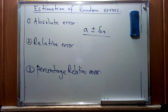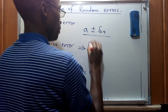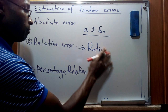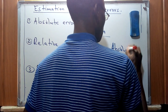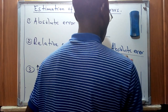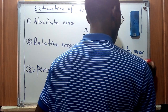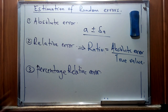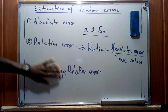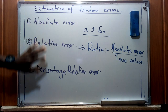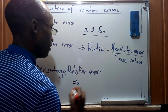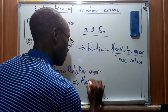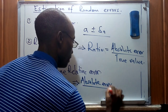For relative error, the uncertainty is expressed as a ratio of the uncertainty to the quantity itself. This ratio is given as absolute error over the true value. For percentage relative error, this is an expression of the relative error given as a percentage — that is, the ratio of absolute error over the true value, expressed as a percentage.